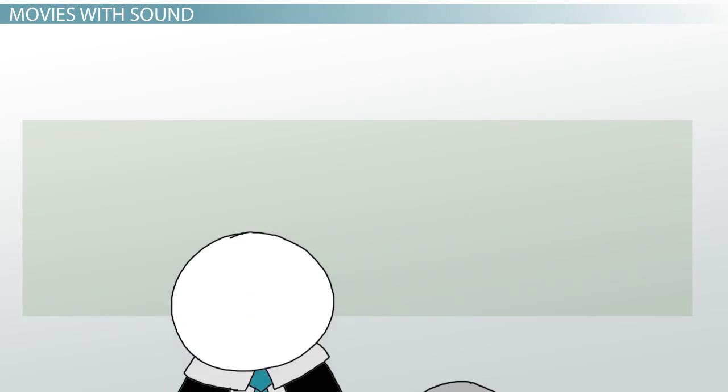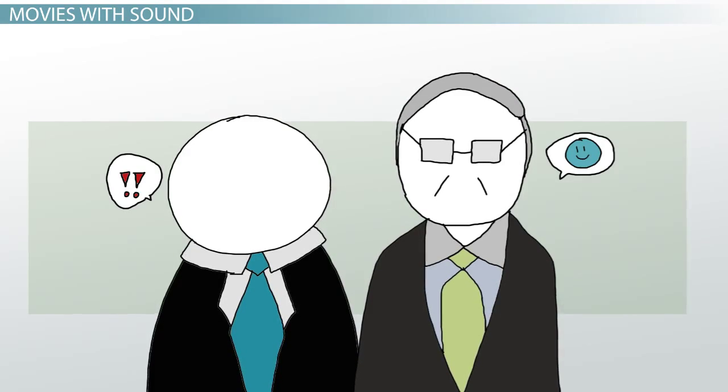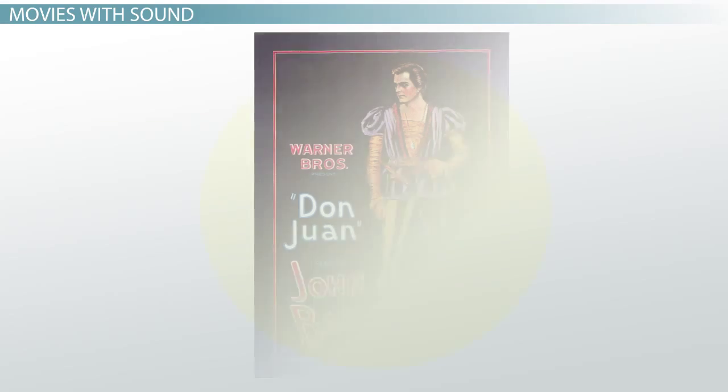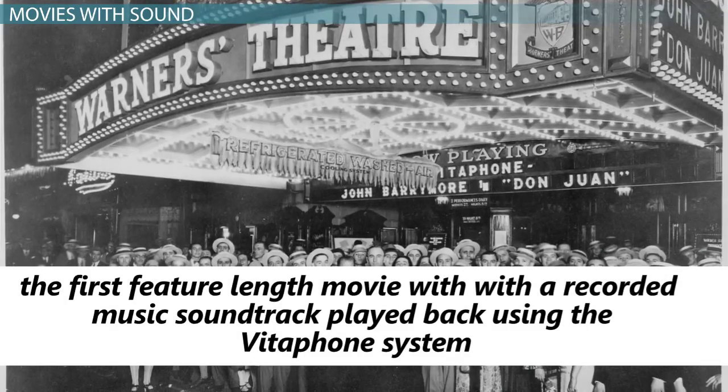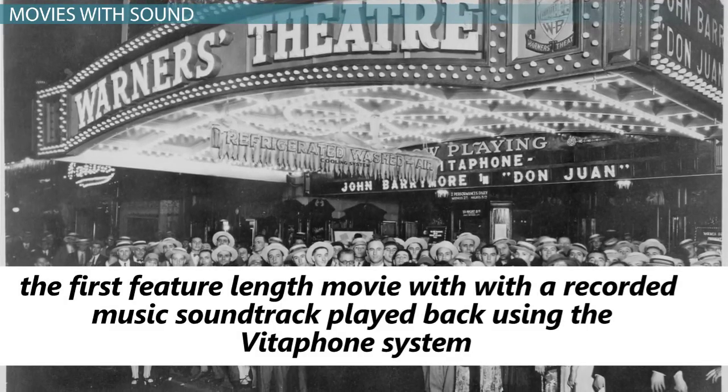When filmmakers learned about the new capabilities for sound and film, they were excited to try them out. Warner Bros. Studios released the film Don Juan in 1926, the first feature-length movie with a recorded music soundtrack played back using the Vitaphone system.